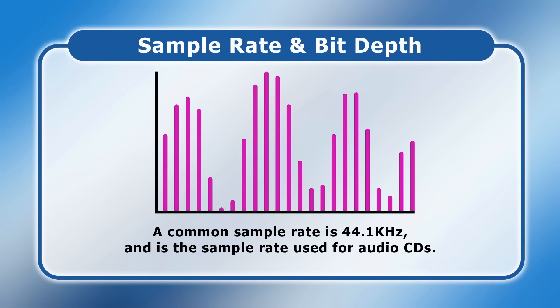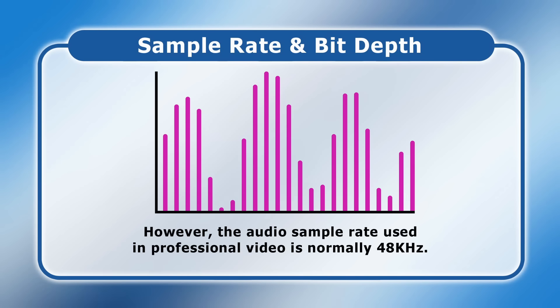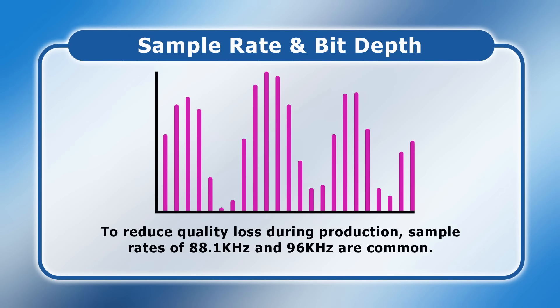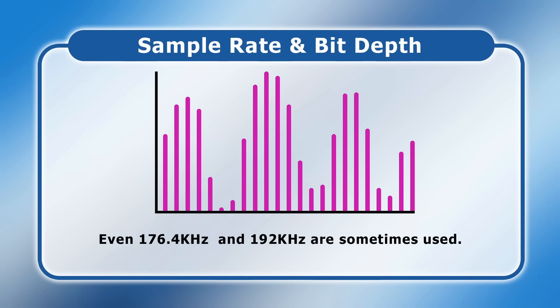44.1 kHz is the sample rate used for audio CDs and is considered to be high quality, as it equates to the capabilities of human hearing. However, the audio sample rate used in professional video is normally 48 kHz. And to reduce quality loss during production, sample rates of 88.1 and 96 kHz are common. Even 176.4 and 192 kHz are sometimes used, although these are only necessary when engaging in significant post-production.